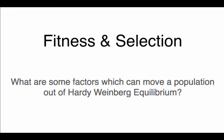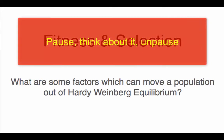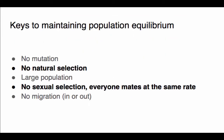Hi, this video is about selection and fitness. Let's start off by answering this question: what are some factors which can move a population out of Hardy-Weinberg equilibrium? As we discussed before, there are five factors that keep a population in Hardy-Weinberg equilibrium, and they are shown on the screen.